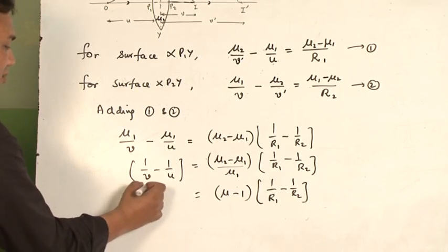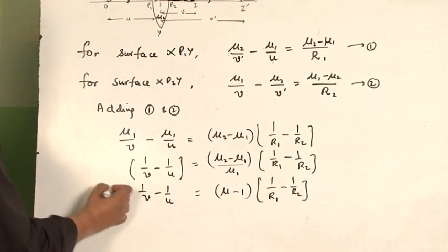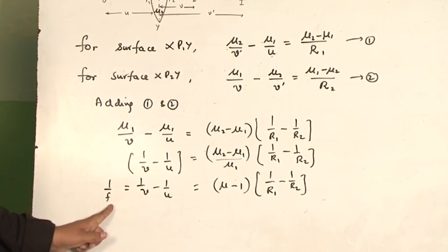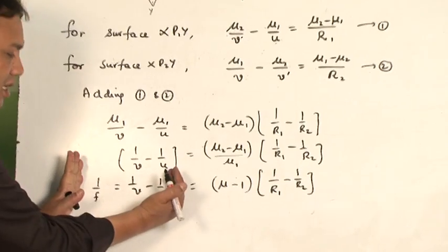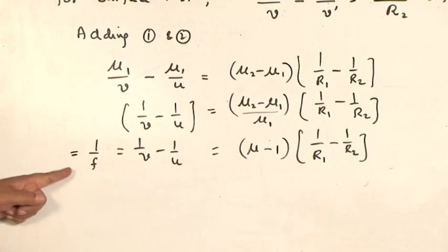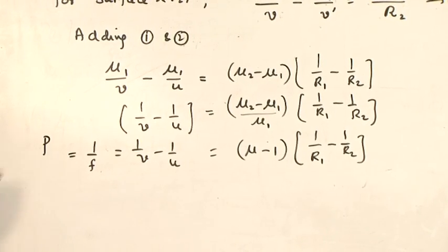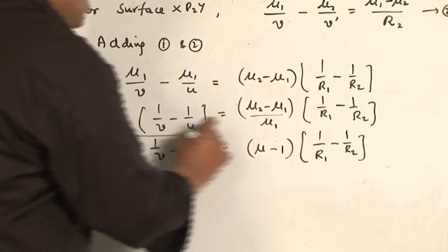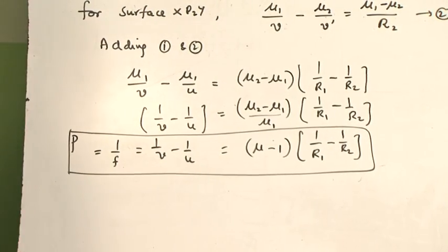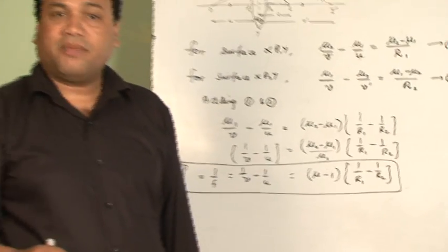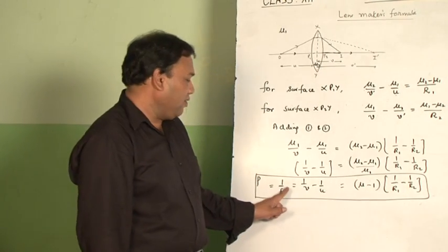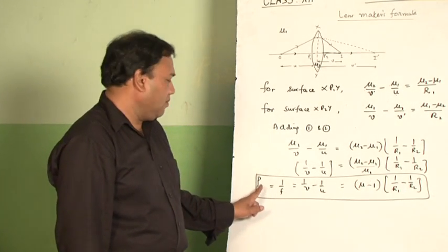This is equal to 1/f, because 1/v minus 1/u equals 1/f. So this portion is the lens formula, but the reciprocal of the focal length of a lens is also called its power. Therefore, this formula — 1/f = (μ−1)(1/r1 − 1/r2) — is called the lens maker's formula. Lens manufacturers use this formula to manufacture a lens of given focal length or a particular power.